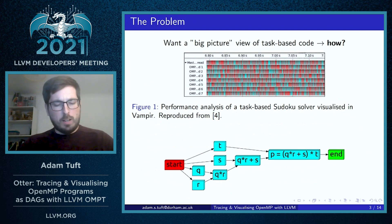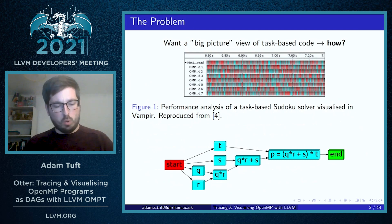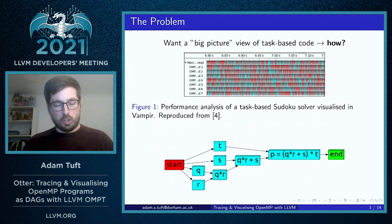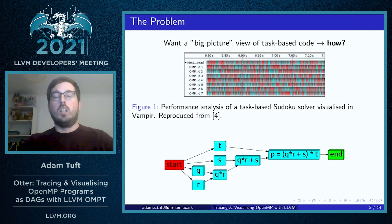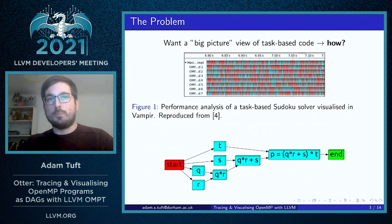We can see this thread-centric view gives quite a poor view of the actual underlying task-based structure which we'd like to get a big-picture view of. So we'd like to be able to understand the underlying task graph structure, and this is where the LLVM OpenMP Tools Interface comes in — allowing us to get access to runtime data to record the task-based structure of a program.